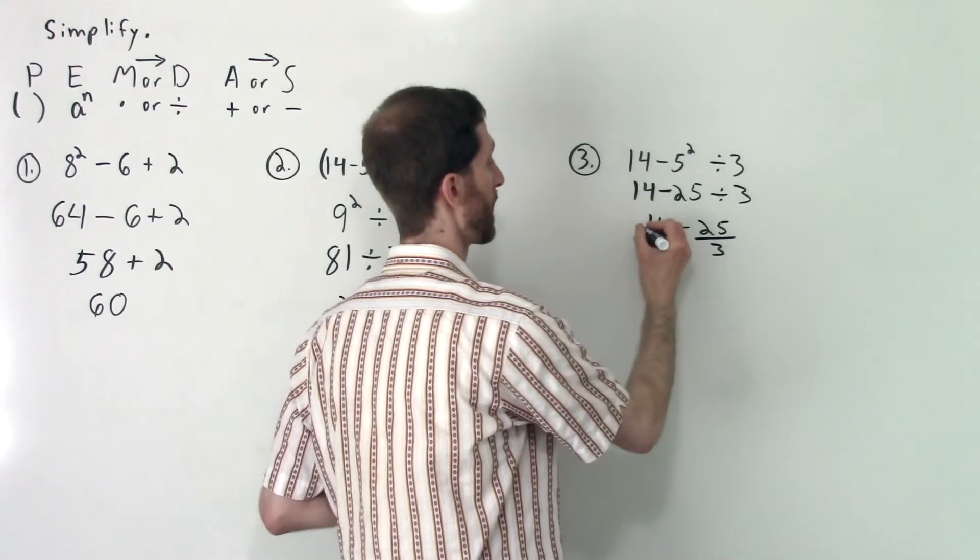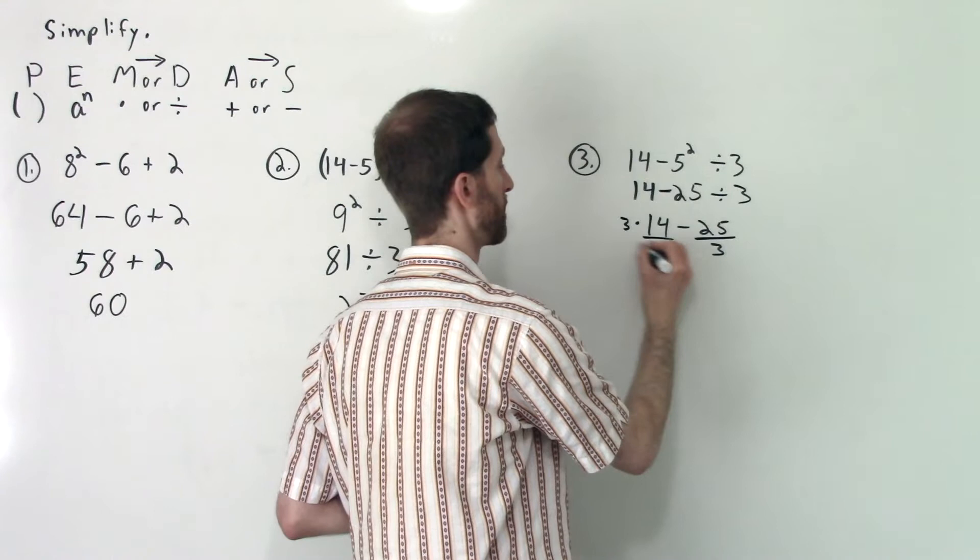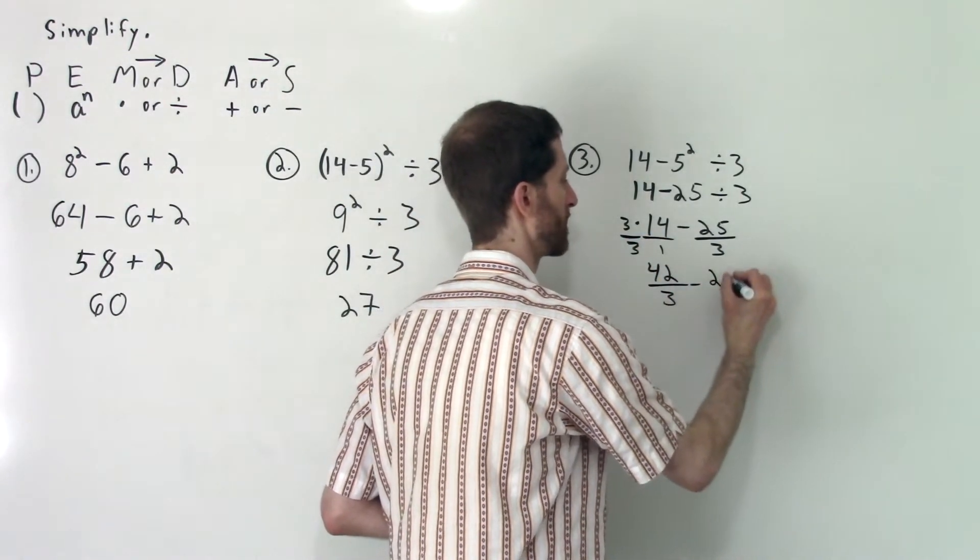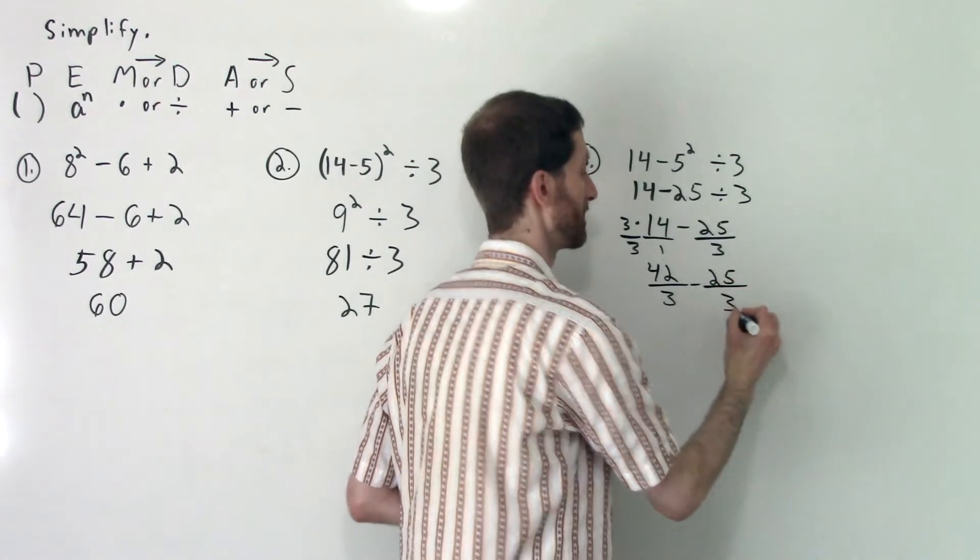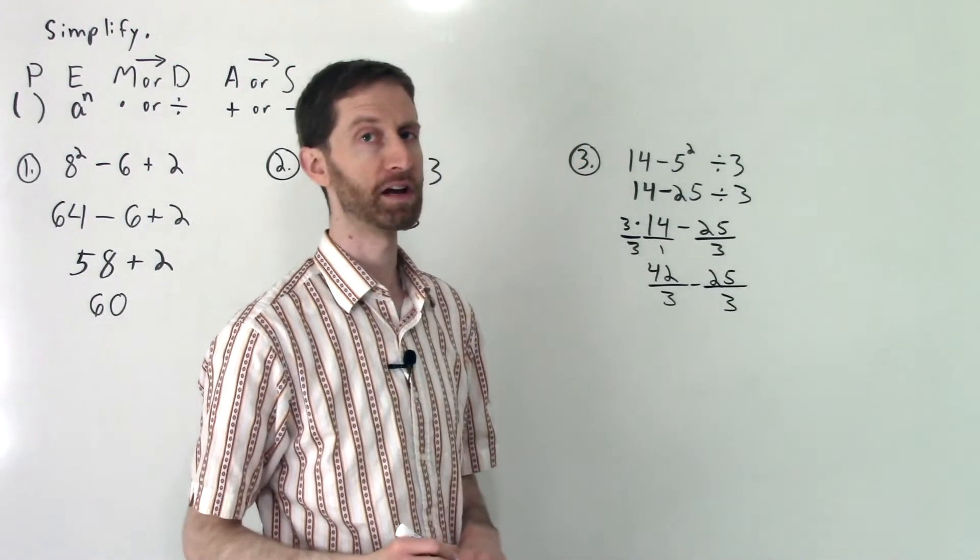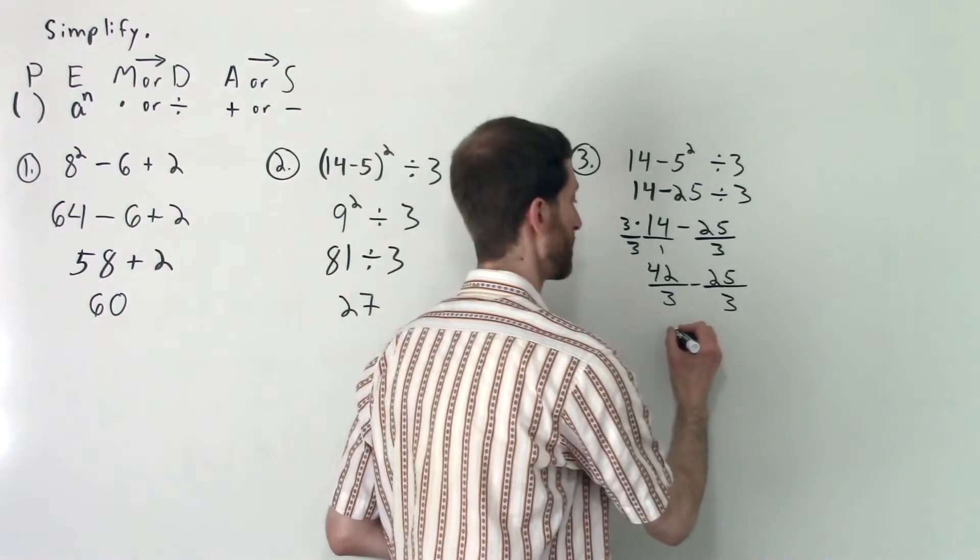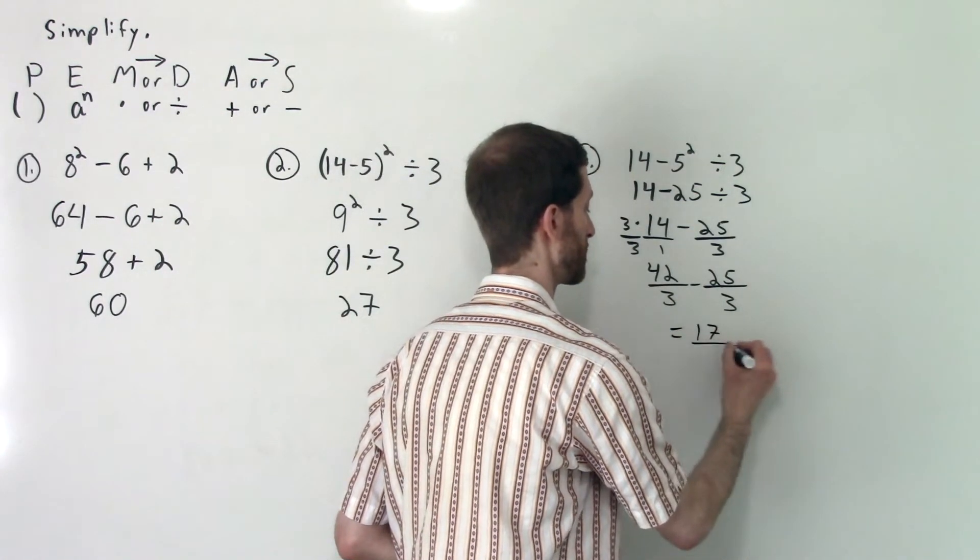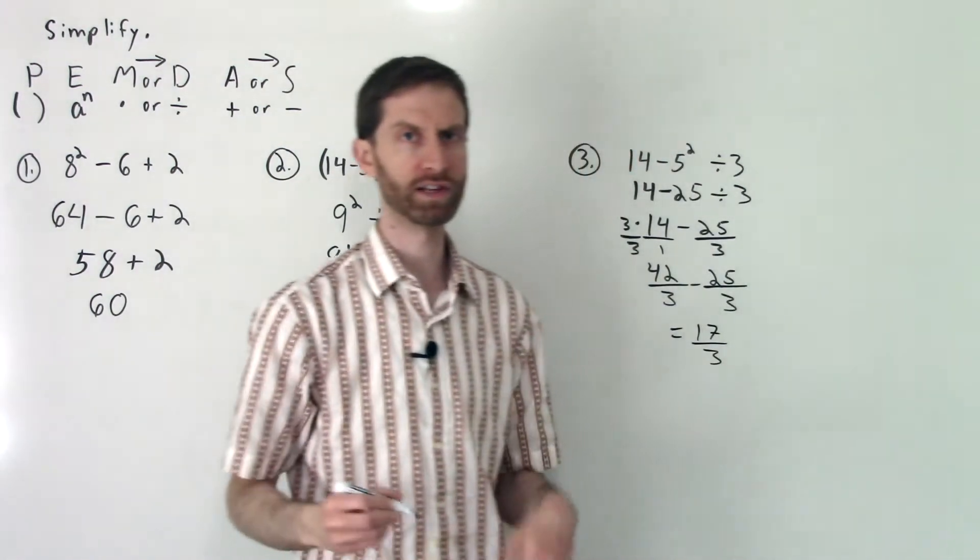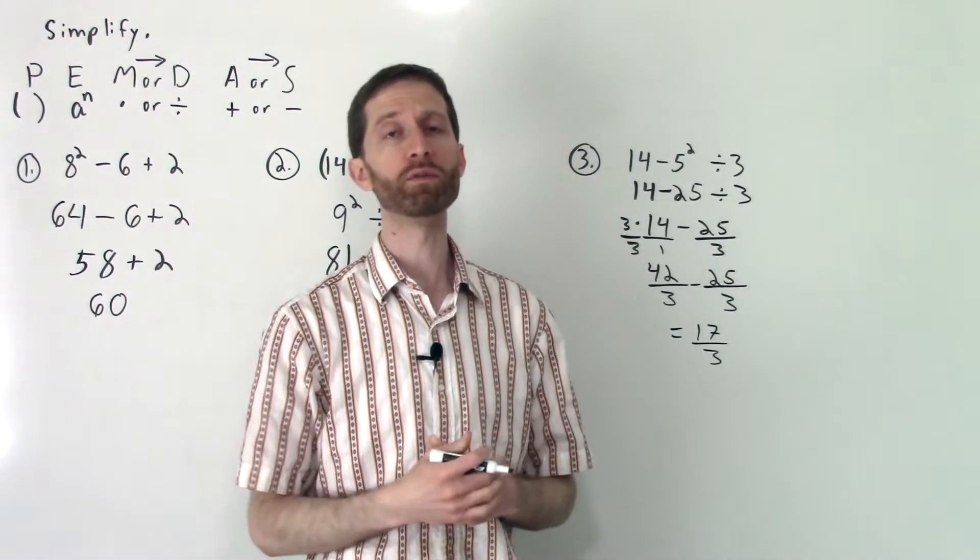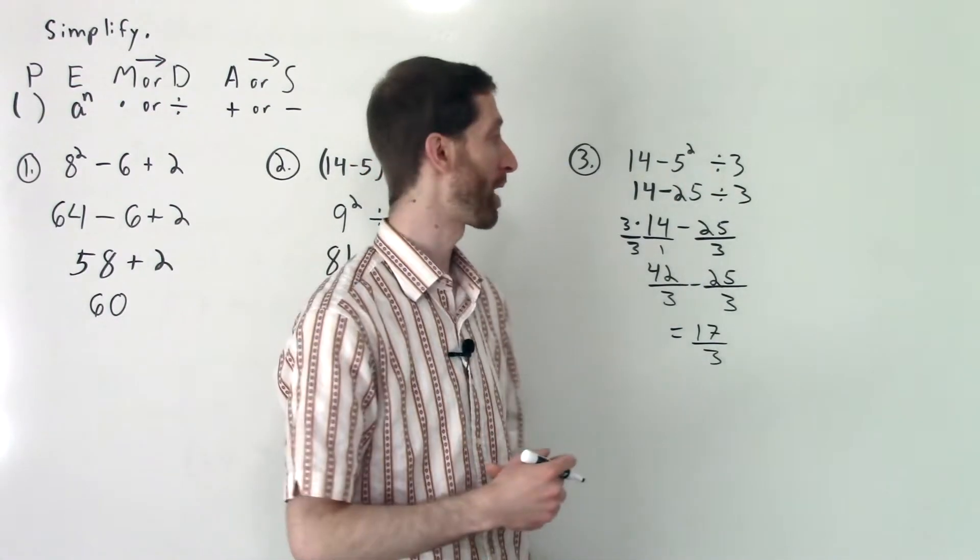So now I've got 14 - 25/3. I'm going to make 14 out of thirds, so I'll have to multiply the top and bottom by 3/3. That's going to be 42/3. You're in a higher level class now. We should be able to handle fractions. 42 - 25 is equal to 17/3. And if you're saying you can't handle fractions, I need some help on that, check out some of my previous videos on it. I've also got a review on that later on in this Algebra 1 course.